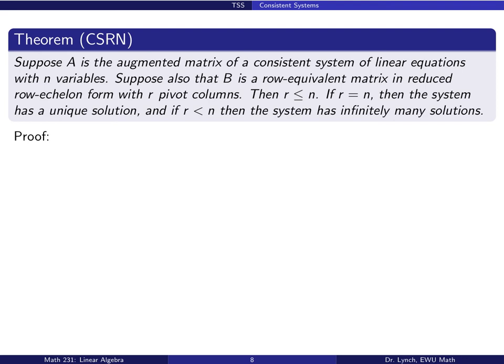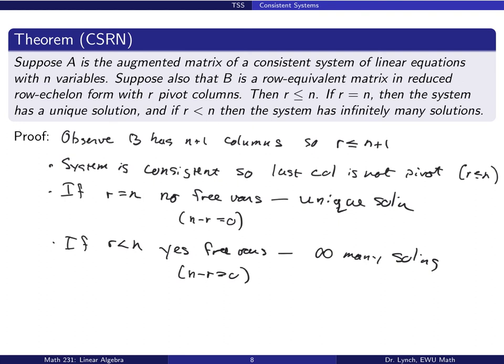The take-home message is that this theorem allows us to recognize whether an augmented matrix in reduced row echelon form represents a consistent system. If the last column is a pivot column — no solution. If the last column is not a pivot column — consistent, meaning at least one solution. This theorem is a summary: if the system is consistent and the number of pivots equals the number of variables, the system has a unique solution; if there are more variables than pivots, there are infinitely many solutions.